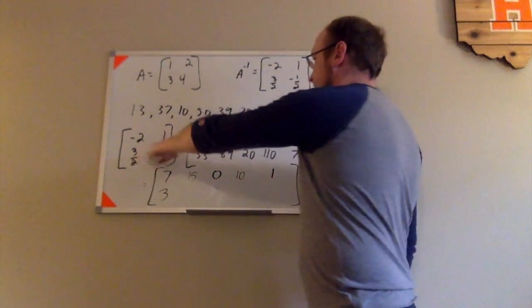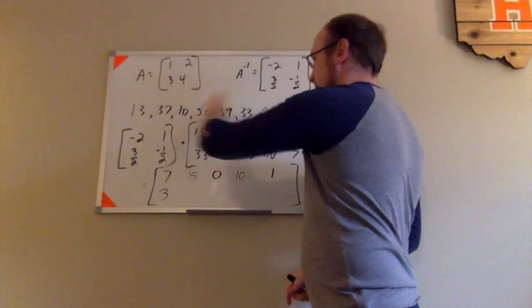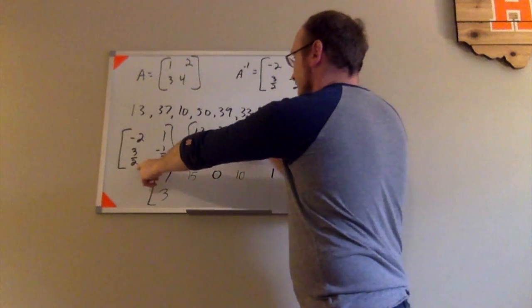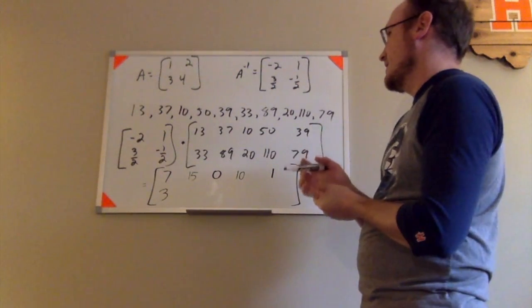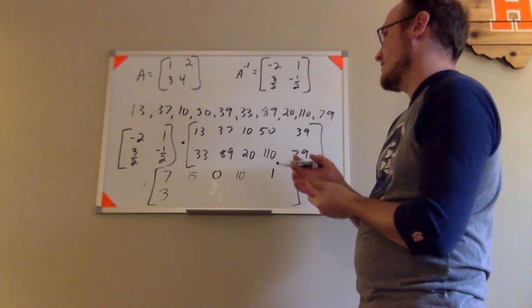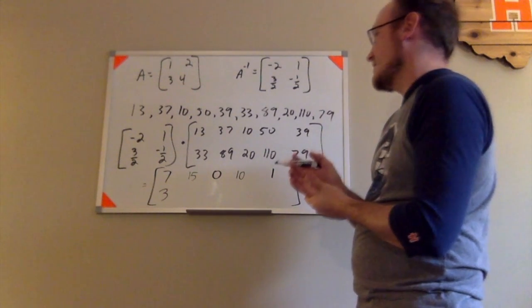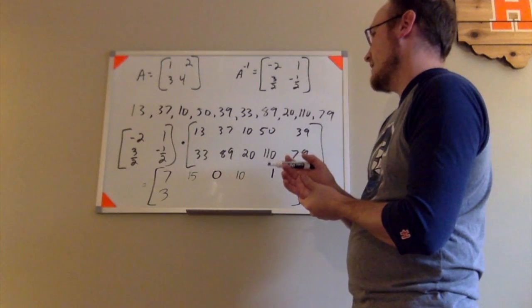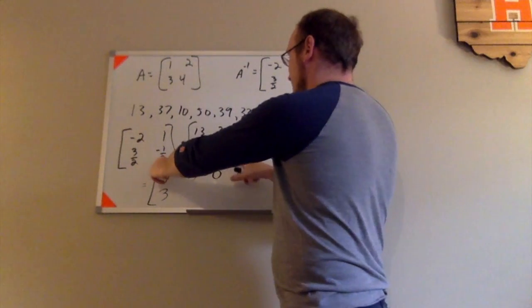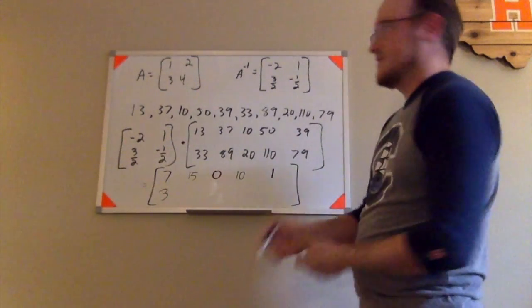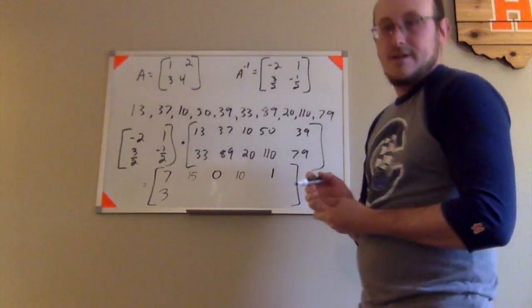Now moving to the second row there, second column. I have 3 halves times 37. Let's see. 3 times 37 would be 90. And then another 21. So that would be 111 halves. So I'd have 111 halves minus 89 halves.